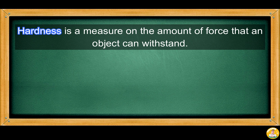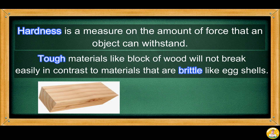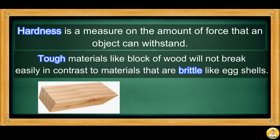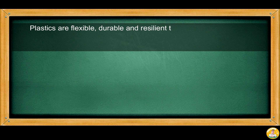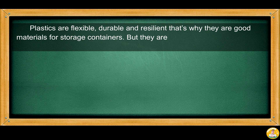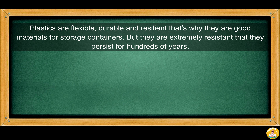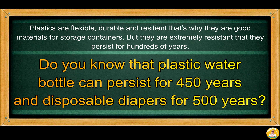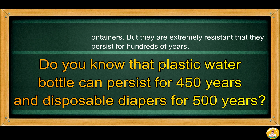The performance of some solid materials considers their response to external forces. Hardness is a measure of the amount of force that an object can withstand. Tough materials like a block of wood will not break easily, in contrast to materials that are brittle like eggshells. Plastics are flexible, durable, and resilient — that's why they are good materials for storage containers. But they are extremely resistant and persist for hundreds of years. A plastic water bottle can persist for 450 years and disposable diapers for 500 years.